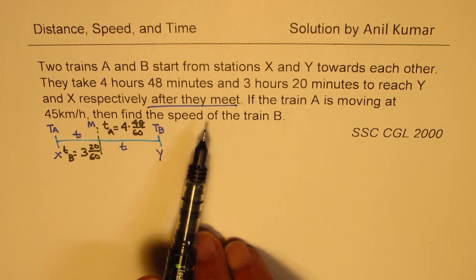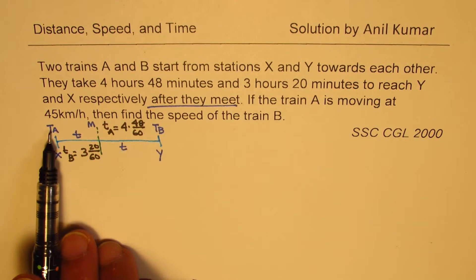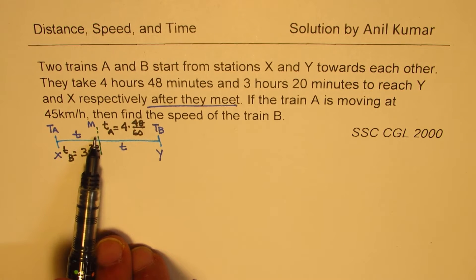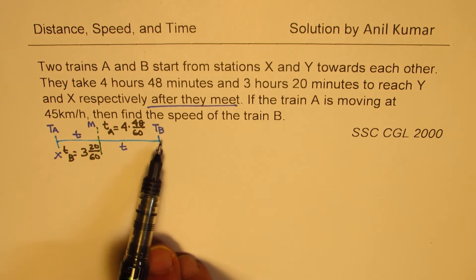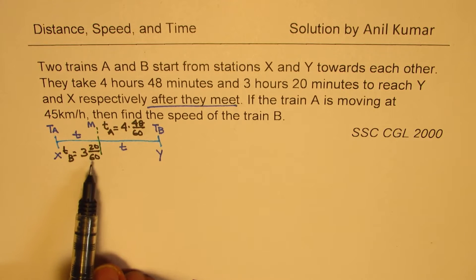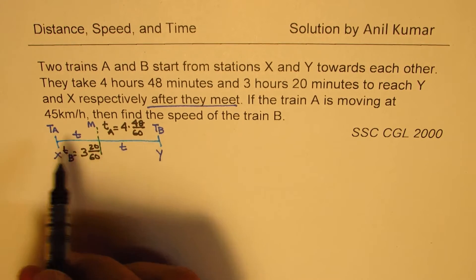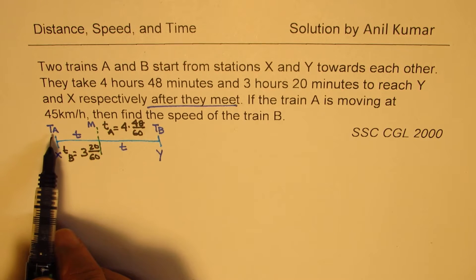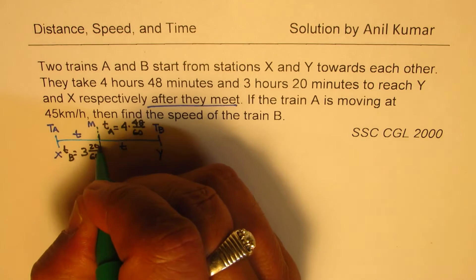From here, what you notice is that in time T, the first train A travels up to M. And the same distance is traveled by train B in a given time, 3 hours 20 over 60. So what we can do is write down a general formula. During this period of time, let's work on this.